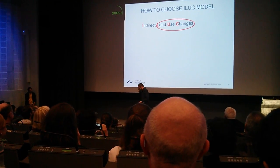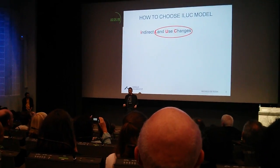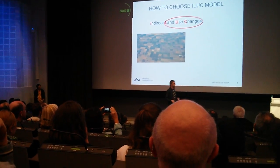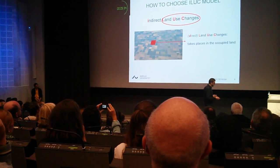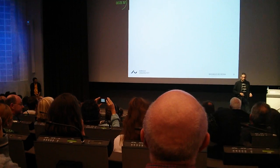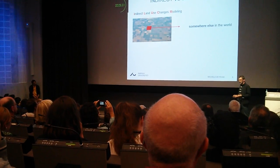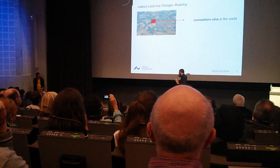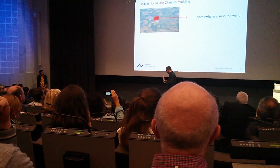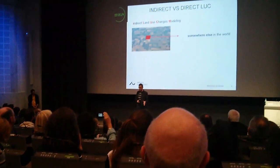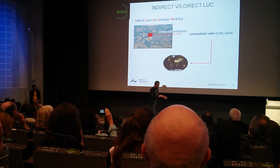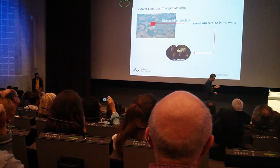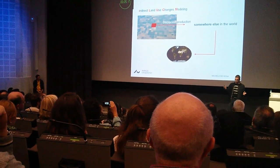Land use change is the impact that takes place directly on a piece of land when we occupy it for production. While the indirect land use change is an impact that takes place somewhere else in the world as a consequence of occupying a piece of land here. When we occupy a piece of land, we displace some production and it takes place somewhere else in the world. This is the indirect condition.